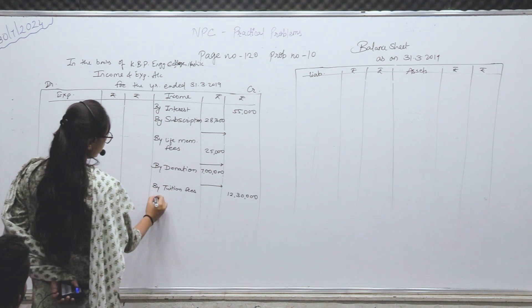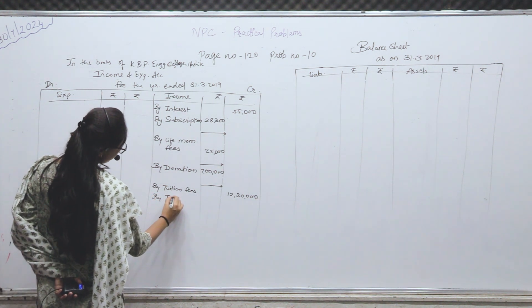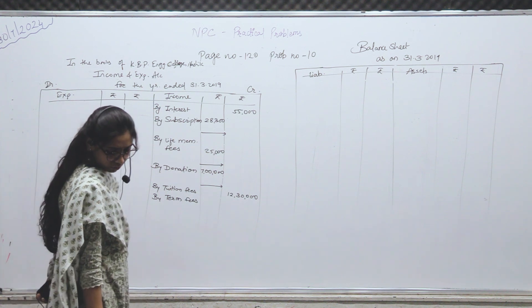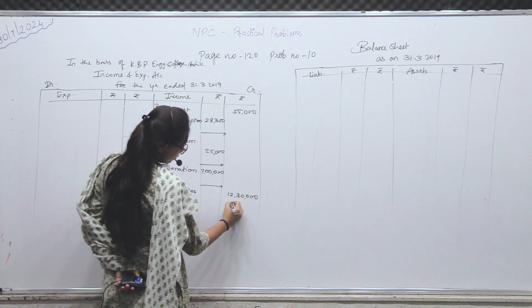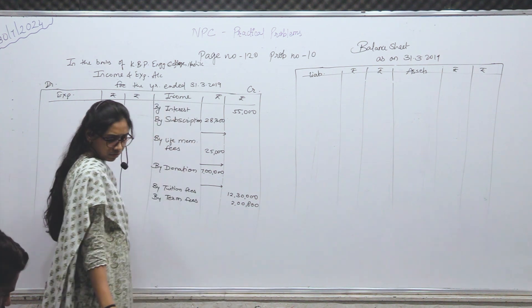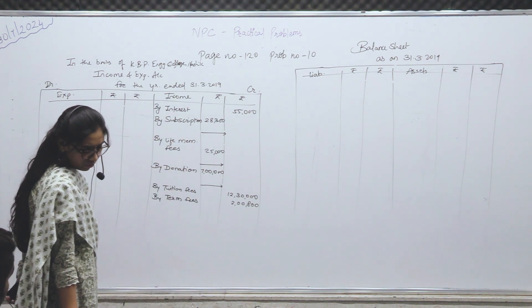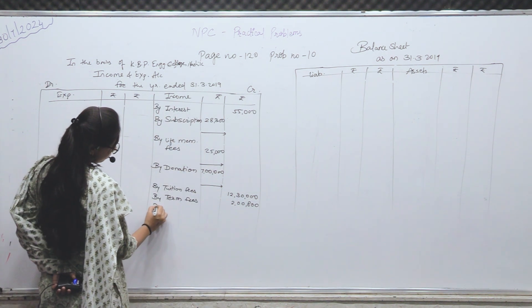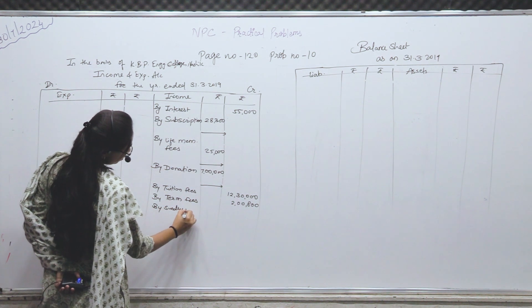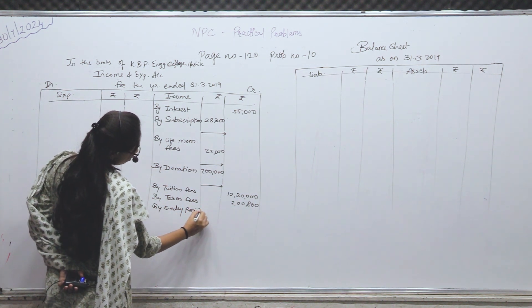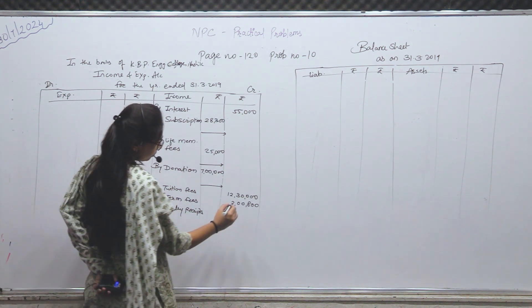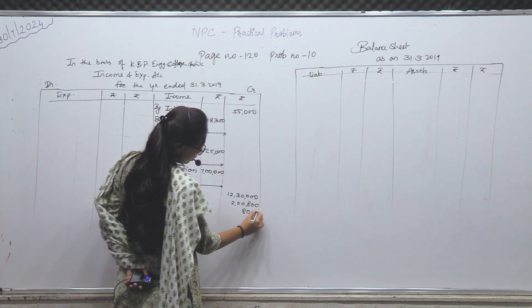Next — term fees। By term fees — 2,800 — amount — 0 के नीचे 0 आना चाहिए, बराबर। उसके बाद — sundry receipts। By sundry receipts — 8,000 — outer column में।